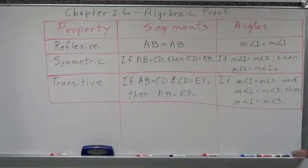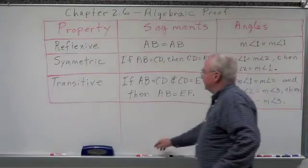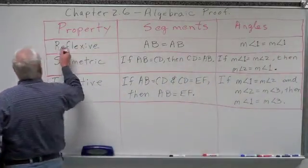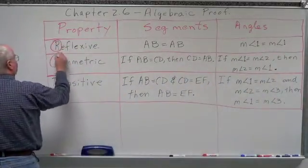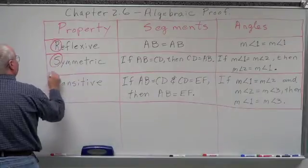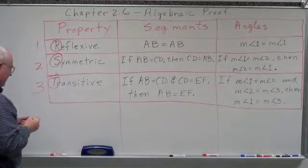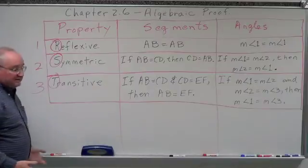In angles: if the measurement of angle 1 equals the measurement of angle 2, and the measurement of angle 2 equals the measurement of angle 3, then the measurement of angle 1 equals the measurement of angle 3. Again — one, two, three entities. This starts with R, S, T: one, two, three. Three entities. That's how I remember them.